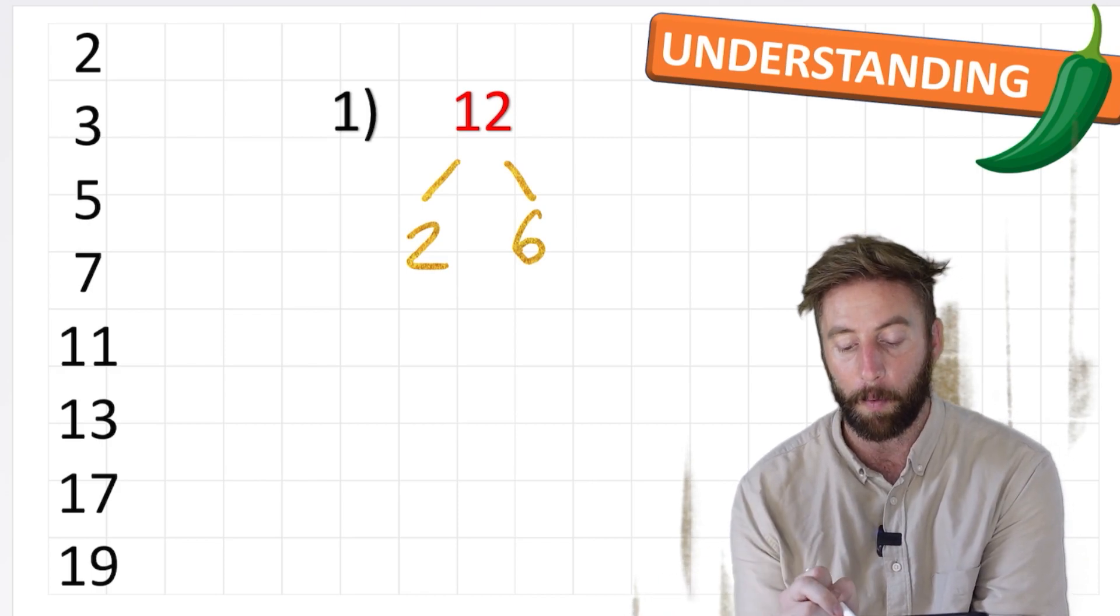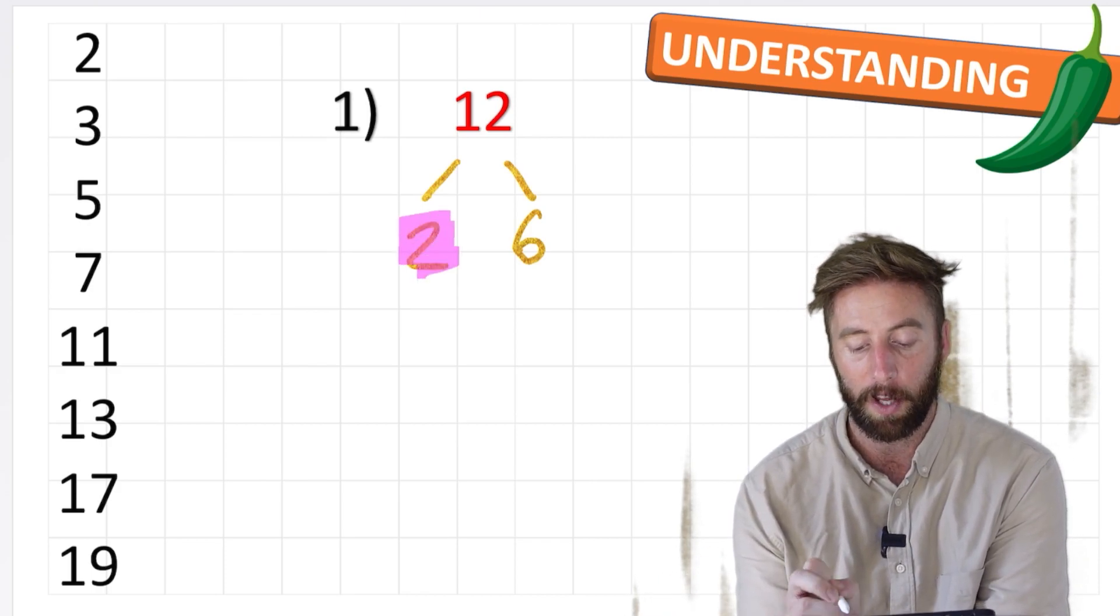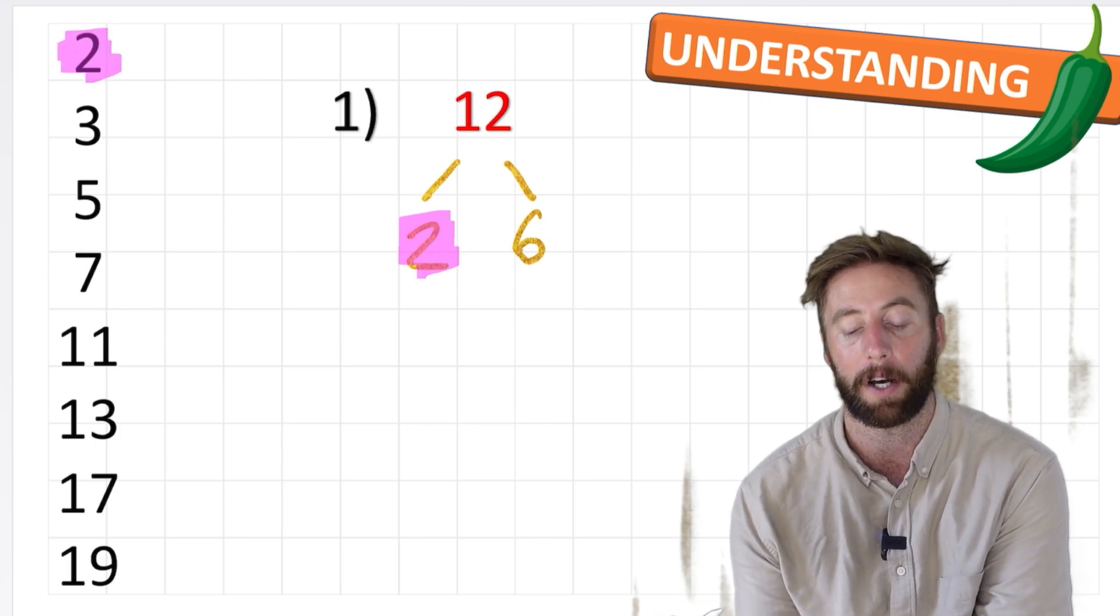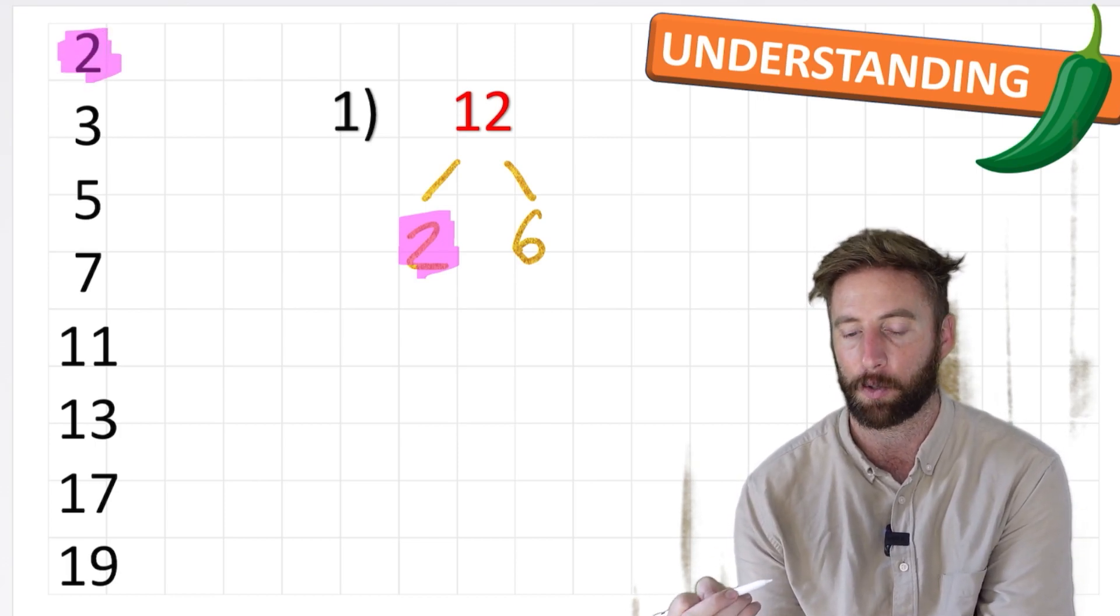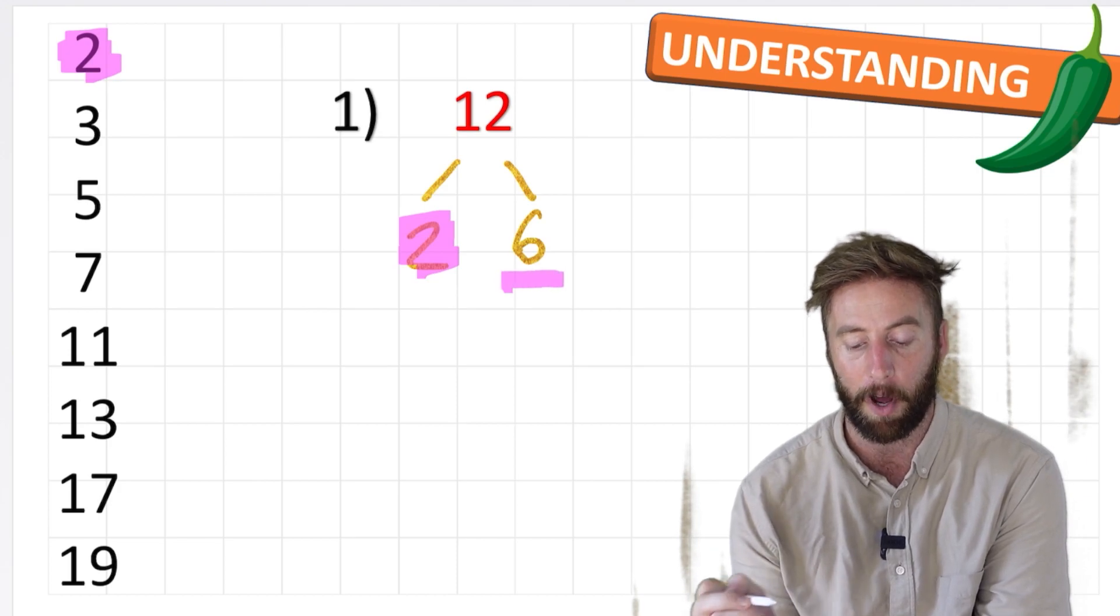2 times 6 is 12. Now, what can we notice straight away? We have the number 2 and 2 is a prime number. So we've already got that branch of our tree down to a prime number. But is 6 a prime number?